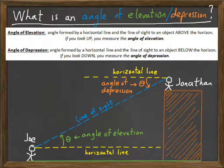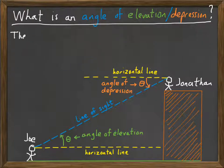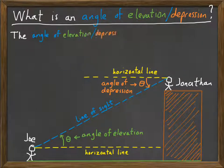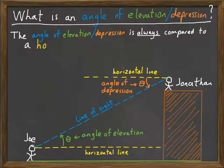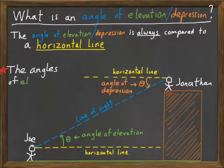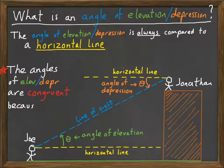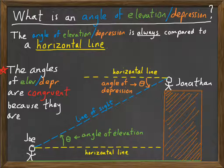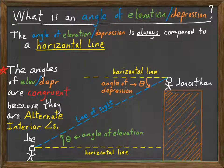You think you get it? Now one thing I want to point out to help you avoid making some mistakes. The angle of elevation and depression are always compared to a horizontal line. It's a common mistake to compare it to a vertical line. As long as you remember to keep it with a horizontal line, you're good. Also, take a note, did you see this? The angles of elevation and depression are congruent because they are alternate interior angles. So Joe's angle of elevation is congruent to Jonathan's angle of depression.